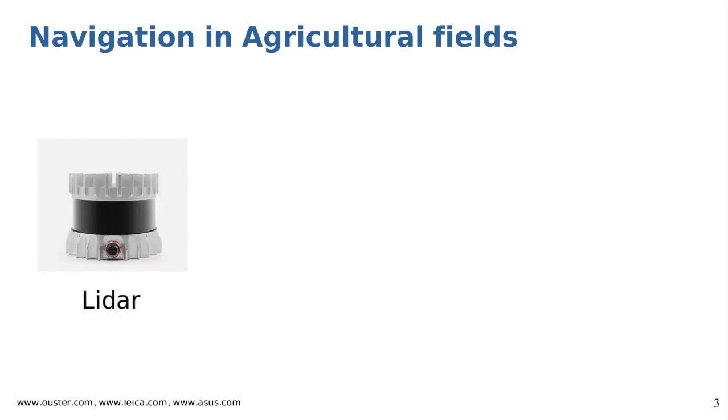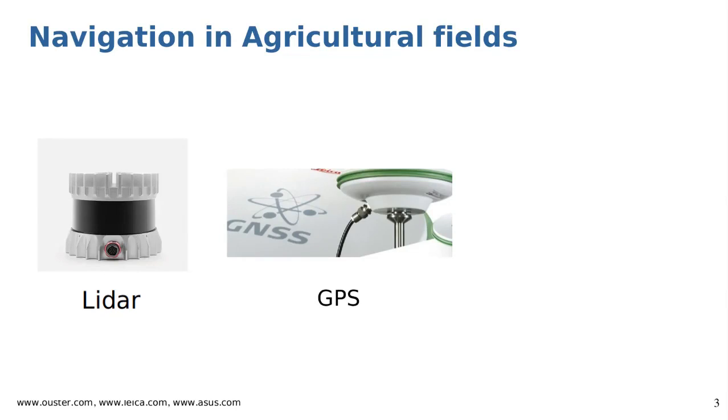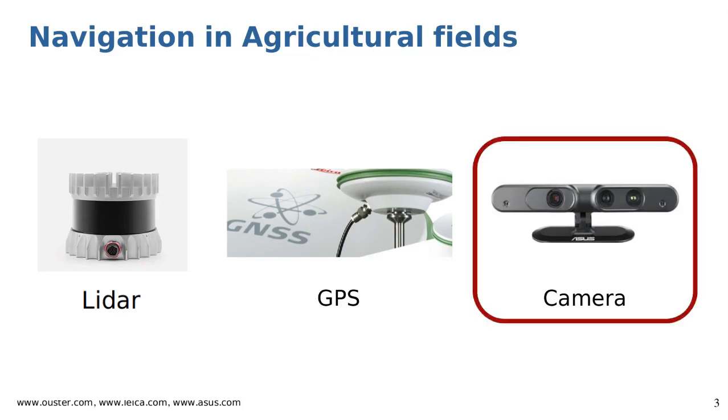Nowadays most systems either use lidar-based navigation or GPS-based waypoint following methods which are expensive and vulnerable to outage. But we only rely on camera observations and aim at controlling the robot without explicitly maintaining a map of the environment or performing localization in a global reference frame.